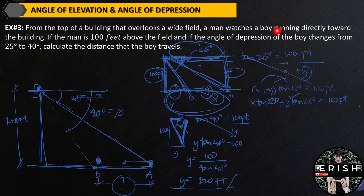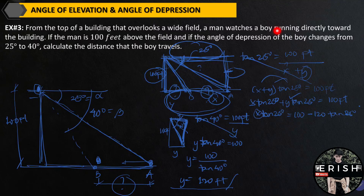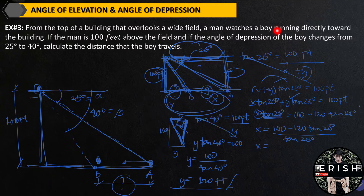We already know this value. We are only looking for X now. Transferring to the other side: X tangent 25 degrees equals 100 minus 120 times tangent 25 degrees. Solving only for X and dividing both sides by tangent 25 degrees: X equals (100 minus 120 tangent 25 degrees) over tangent 25 degrees. By calculating, the value of X is approximately 95 feet. This is the answer for example number 3.